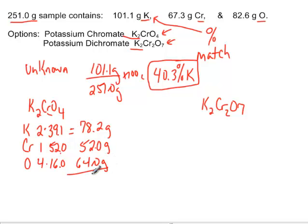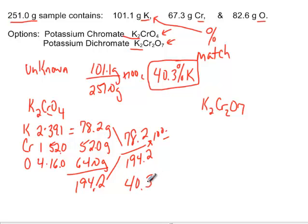If you add them all up together, you get a grand total of 194.2. So this sample has a molar mass of 194.2, and the potassium in it is 78.2. If we do 78.2 divided by the whole thing, 194.2, times 100, the percentage comes out to about 40.3 percent. That looks familiar. It's probably that one.